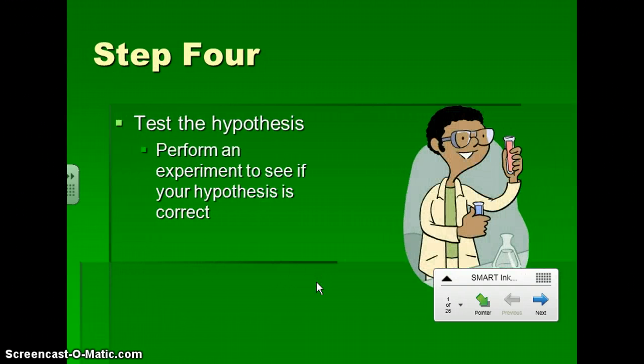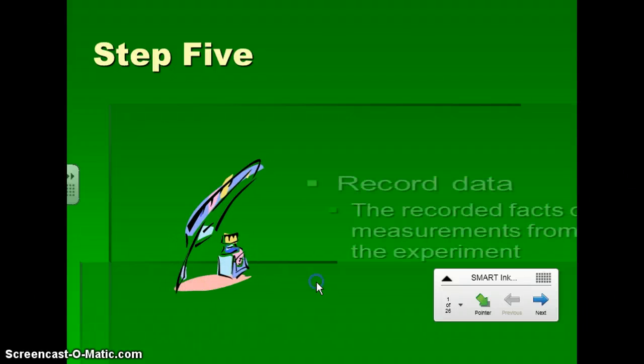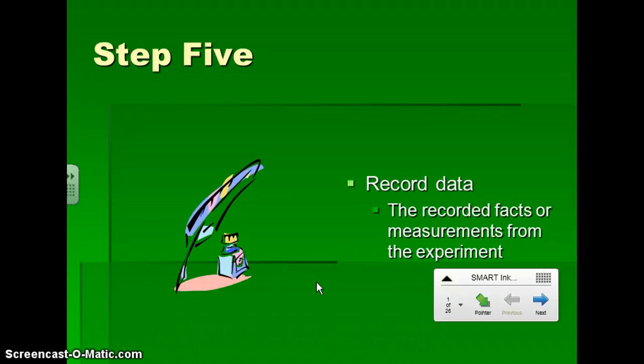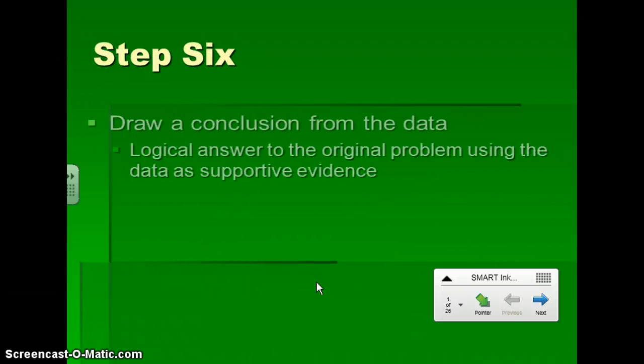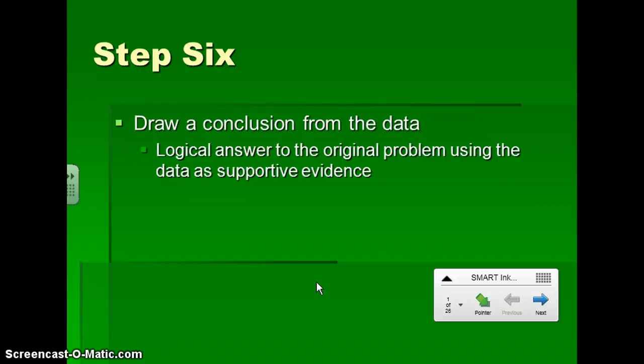Then we're going to test the hypothesis. This is the fun part where we perform the experiment to see if our hypothesis is correct or not. Then in the fifth step, and basically throughout the process, we're going to record our data. We're going to record the facts and measurements from our experiment. And then at the end, we're going to draw a conclusion after we've analyzed the data. Our conclusion should be a logical answer to our problem, using the data as supportive evidence.